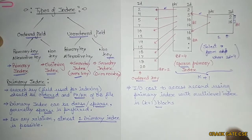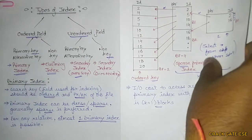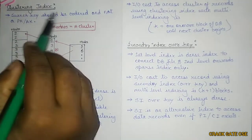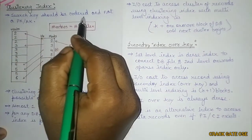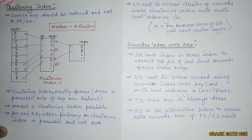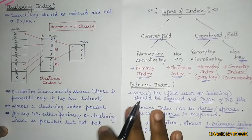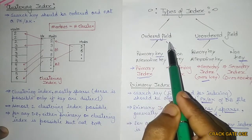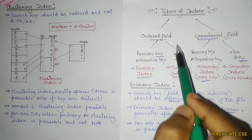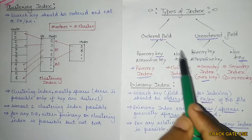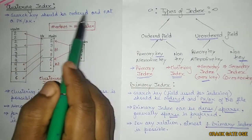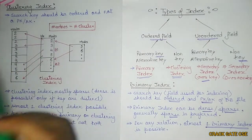Now let's move on to the second type: clustering index. In clustering index, the search key should be ordered but not a primary or alternative key. The number of index entries is equal to the number of clusters.